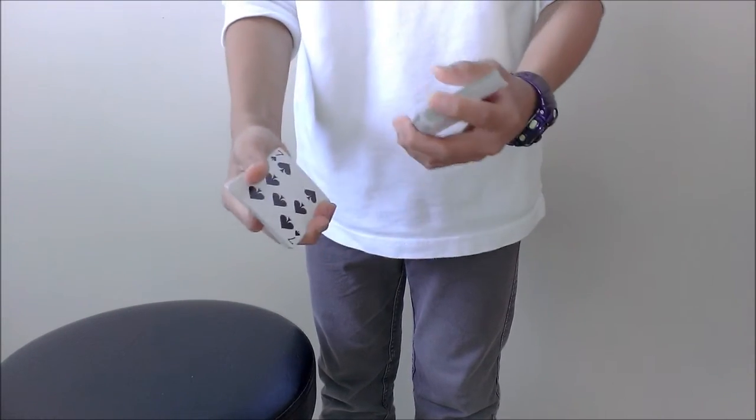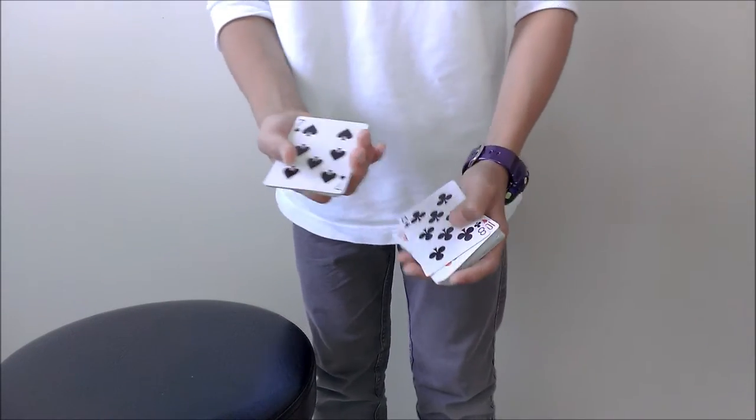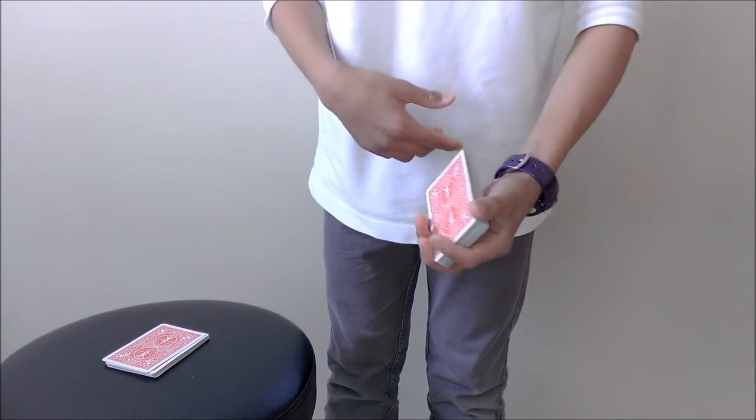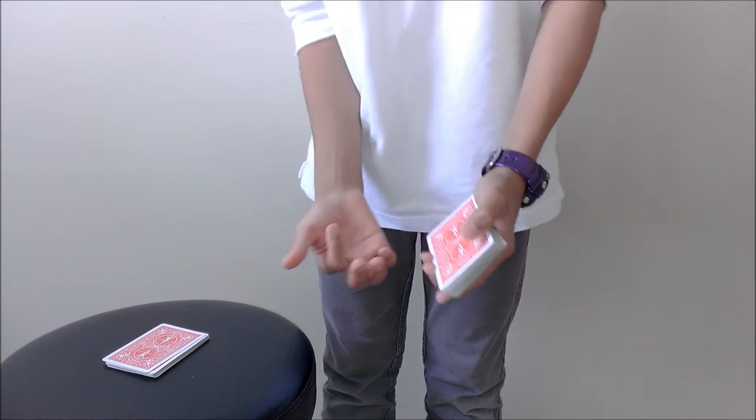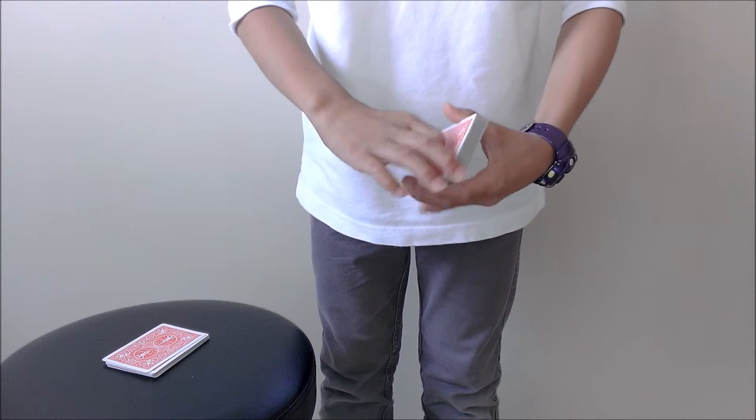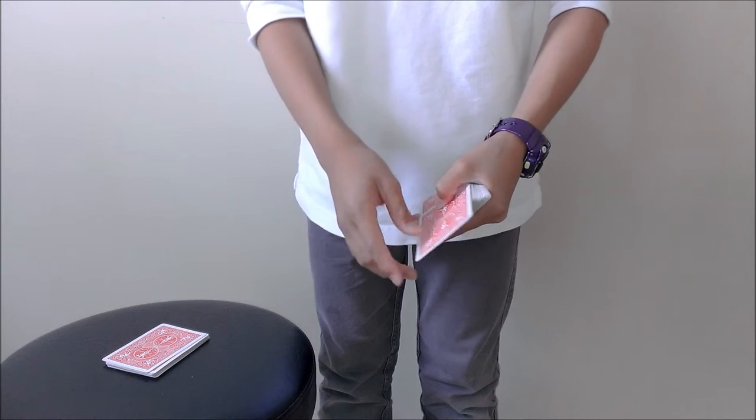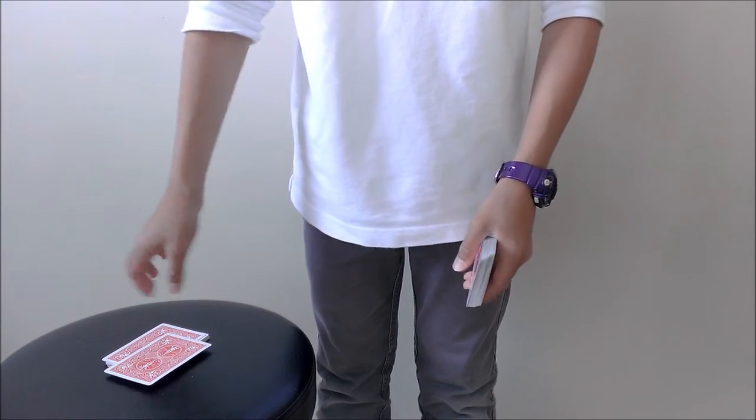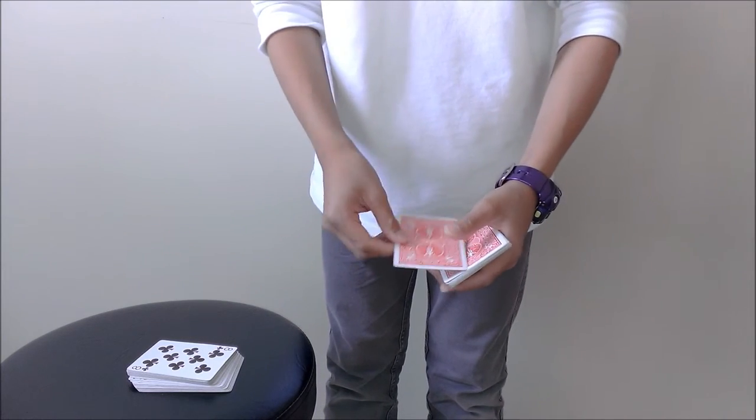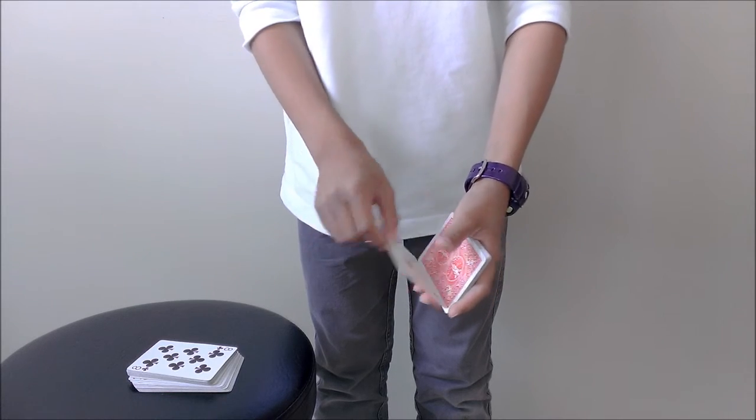Now you have to stop at the number before the selected number. Because if you don't, you're going to get a random card. So once you get to 14, in this case, you're going to grab their card, which is at the top. And that's going to be your next card. So that no matter what number they pick, they're always going to land on the selected card.